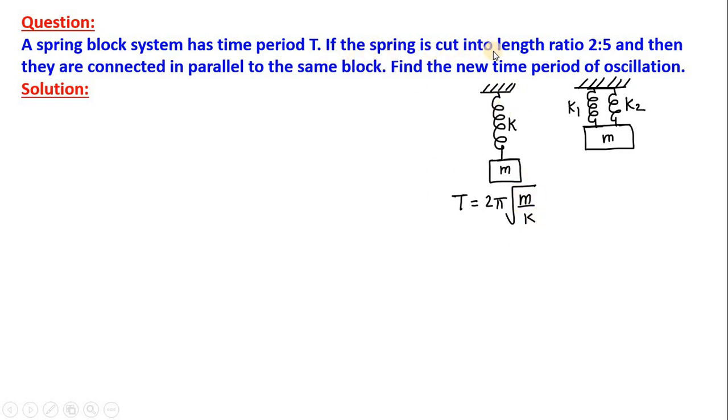Now, if this spring is cut into length ratio 2 to 5, and then they are connected in parallel to the same block. So, these two small pieces having spring constant K1 and K2 are connected in parallel with the same block. Then, what will be the new time period of oscillation?